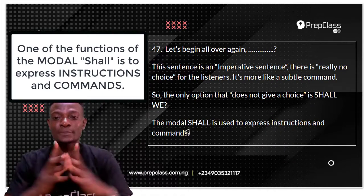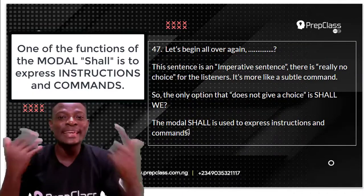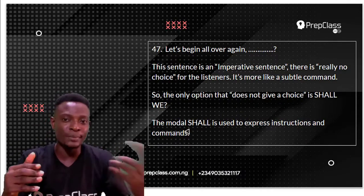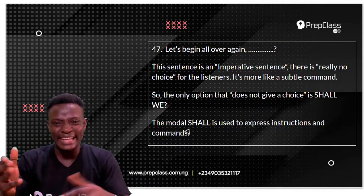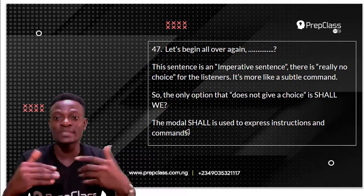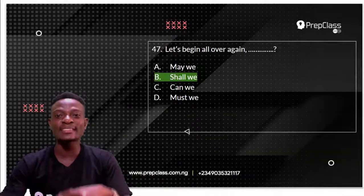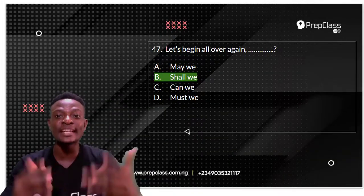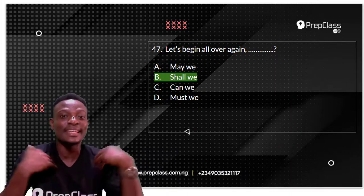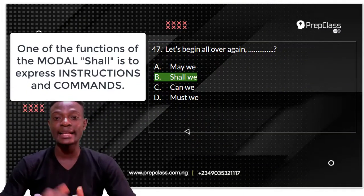The only option that does not give a choice is 'shall we?' Remember, the modal 'shall' is used to express instructions and commands. When you say 'shall we?', the listener basically has no choice but to say yes. Options like 'may we?' or 'can we?' are direct questions where you can say yes or no — that's different.